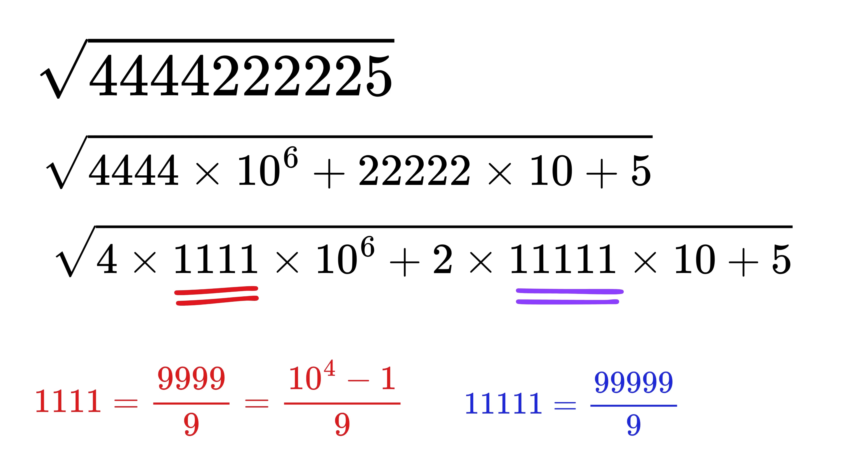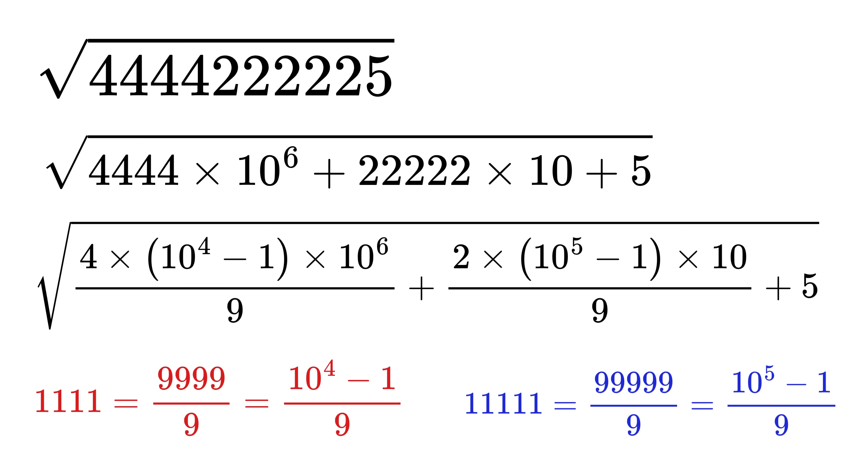Next, these four nines is also equal to ten thousand minus one, or it can also be written as ten raised to four minus one. Then these five nines is also equal to hundred thousand minus one, or it can also be written as ten raised to five minus one.